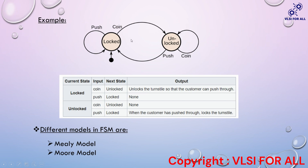If we consider the second state — the unlocked state — as the current state, and we give the input as a coin, it will stay in the same state, that is the unlocked state, and there will be no output. If we give the input as push, it will go to the locked state and gives us the output that when the customer has pushed through, the turnstile locks.